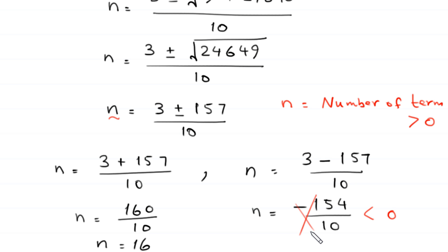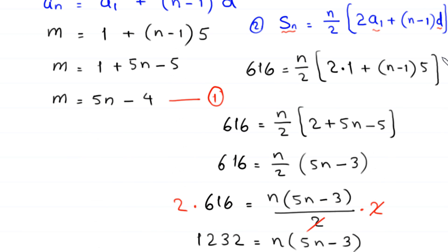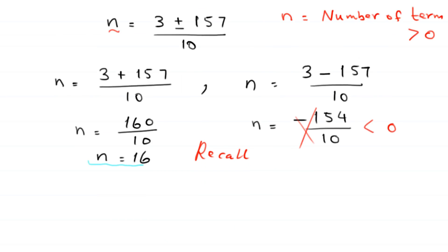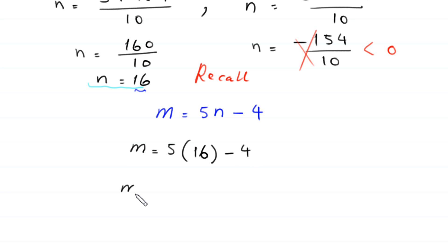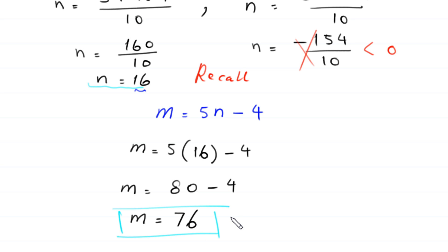Now we find the value of m using Equation 1: m equals 5n minus 4. Substituting n equals 16, m equals 5 times 16 minus 4, which equals 80 minus 4, giving m equals 76. This is the required value of m and our final answer.